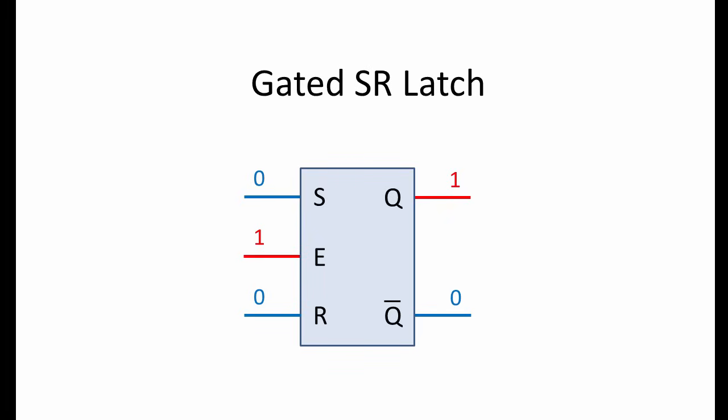imagine an air conditioning system in a building. Each room could have its own cooling unit controlled independently by its own SR latch. The set and reset signals might come from a temperature sensor or a humidity sensor in the room.